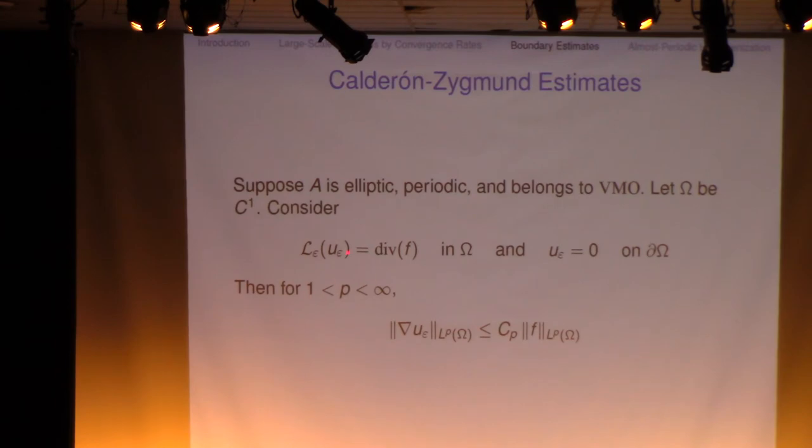And you solve this boundary value problem. With the boundary value 0, you can also put a boundary data G here in some Besov space. And then you have this estimate. This is called a W1P estimate, but it's the same thing as you see for Calderon-Zygmund estimate for Laplacian. So this is also the Calderon-Zygmund estimate for the operator L of W1P. The key is that this constant C is independent of epsilon. It depends on the parameter, it depends on exponent P, on omega, on ellipticity, and on BMO norm of the coefficient.